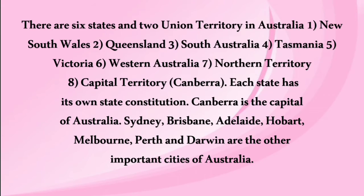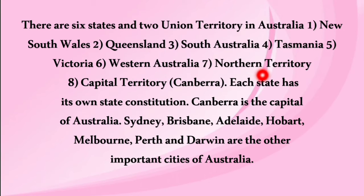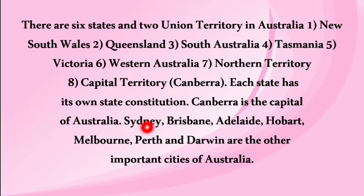There are 6 states and 2 union territories in Australia. The states are New South Wales, Queensland, South Australia, Tasmania, Victoria and Western Australia, plus the Northern Territory and Capital Territory (also called Canberra). Each state has its own constitution. Canberra is the capital, while Sydney, Brisbane, Adelaide, Hobart, Melbourne, Perth and Darwin are the other major cities.